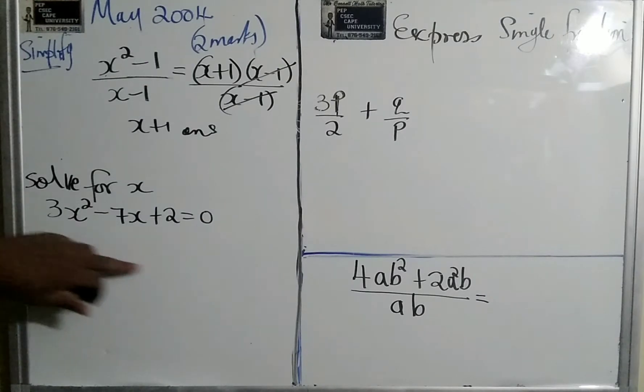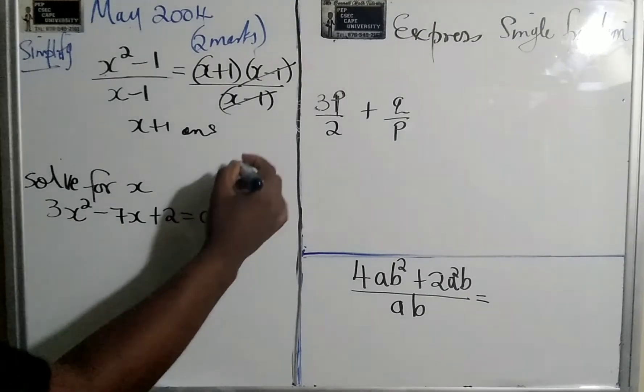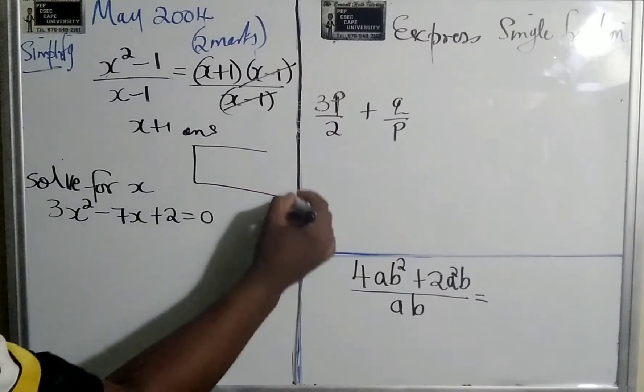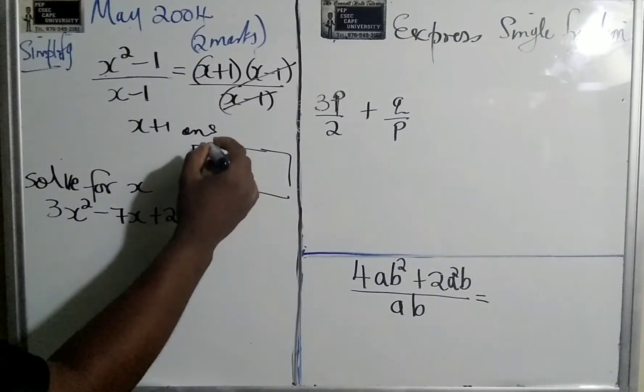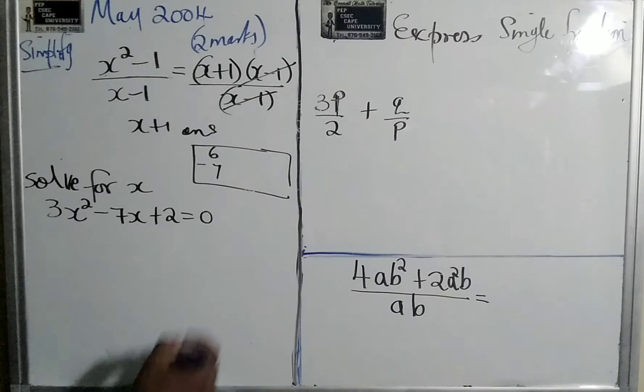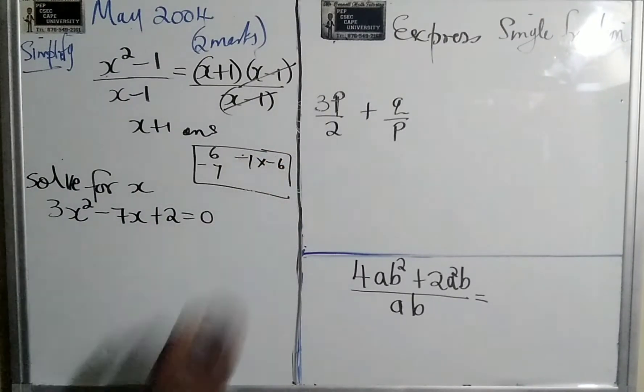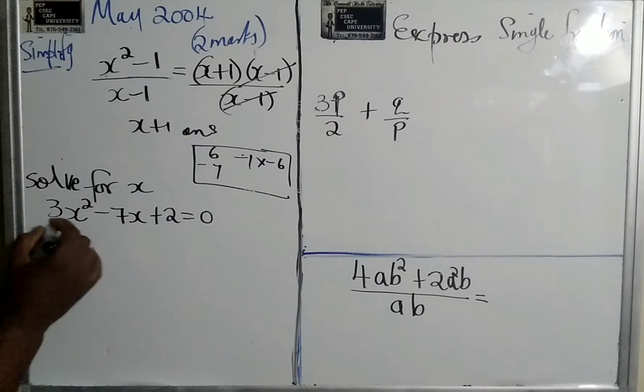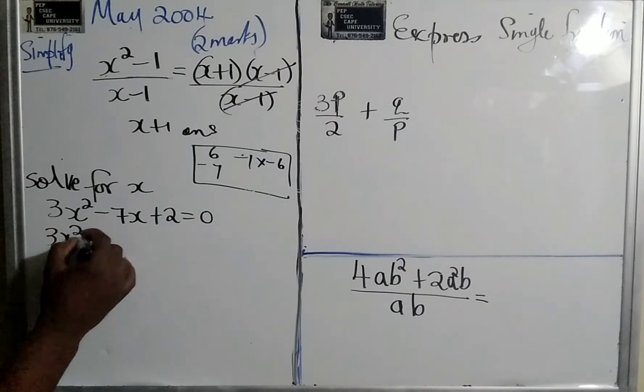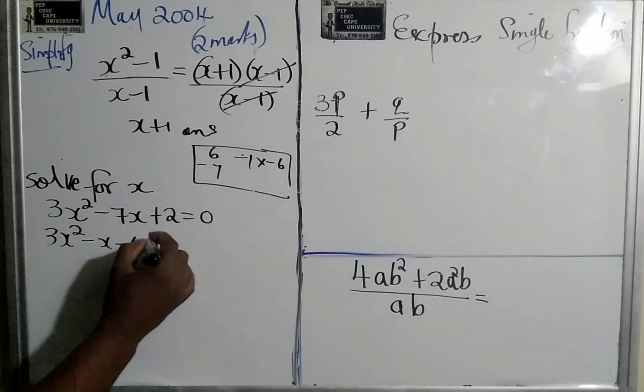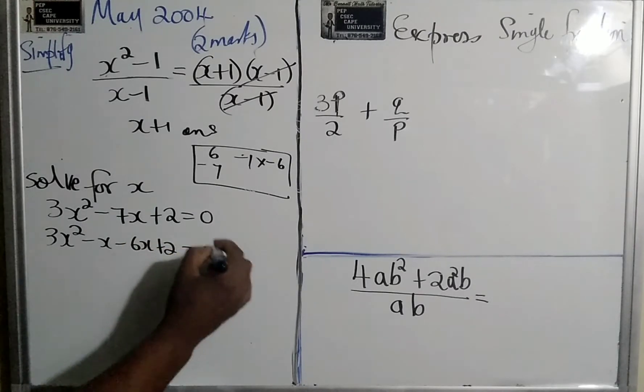This one says solve for x. We are going to factorize basically and then equate it to 0. We need two numbers that multiply to give us 6. Just to help out here, we multiply to give 6, and we add to give negative 7. That can only be negative 1 and negative 6, right? So it's 3x squared minus x minus 6x plus 2 is equal to 0.